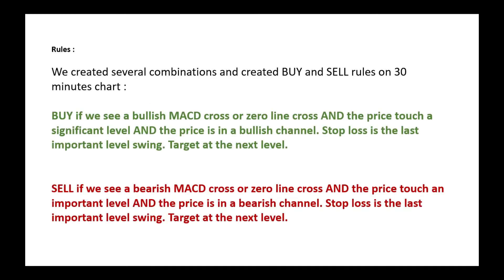So what did we do? We created rules. We created several combinations and created buy and sell rules on the 30-minute chart. Later we repeated this process for 15-minute and one-hour charts, to do some research for intraday trading and MACD settings. Our rules are very simple: buy if you see a bullish MACD cross or zero line cross, the price touches a significant level, and the price is in a bullish channel.